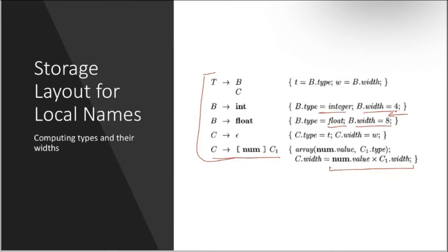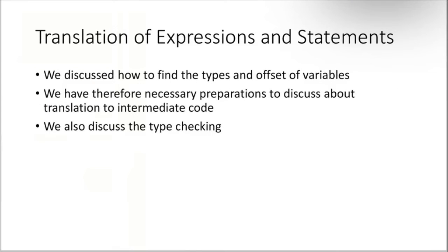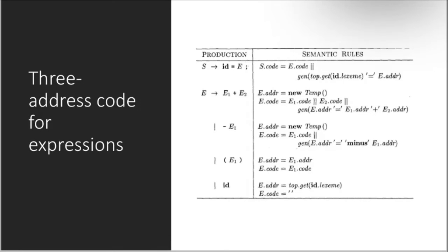Based on this kind of grammar and semantic rules, storage layout for local names is determined. We have discussed dependencies, attributes, how array types like integer flow through the syntax tree, and translation of expressions and statements. We also discussed how to find the type and offset of variables, and have done all the necessary preparation to discuss translation and intermediate code generation including type checking.